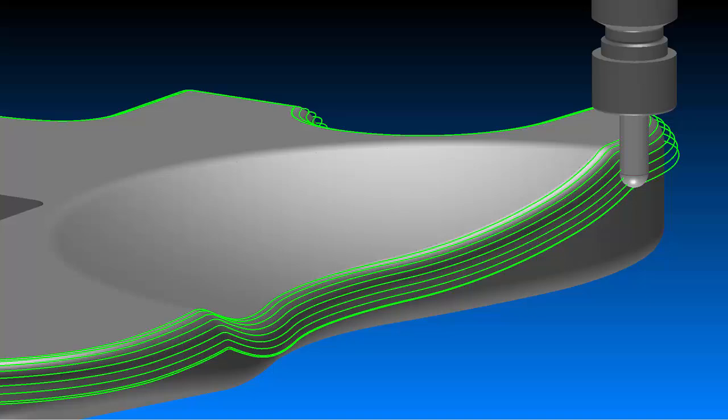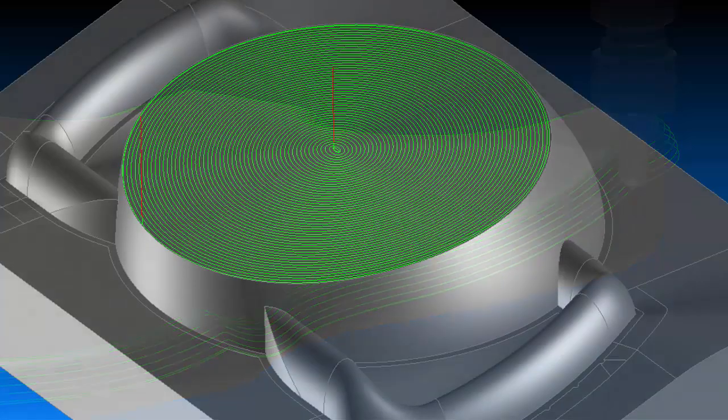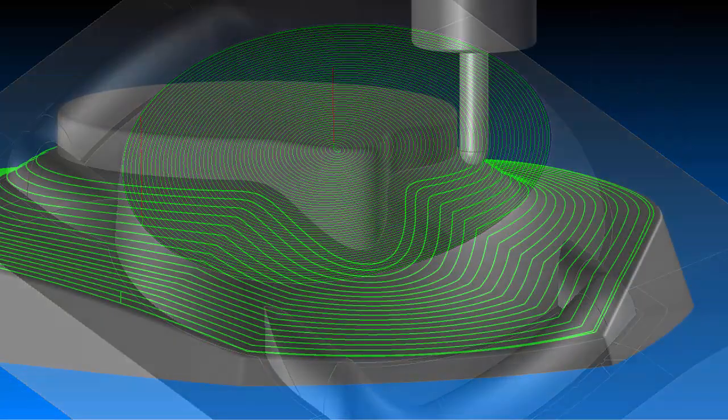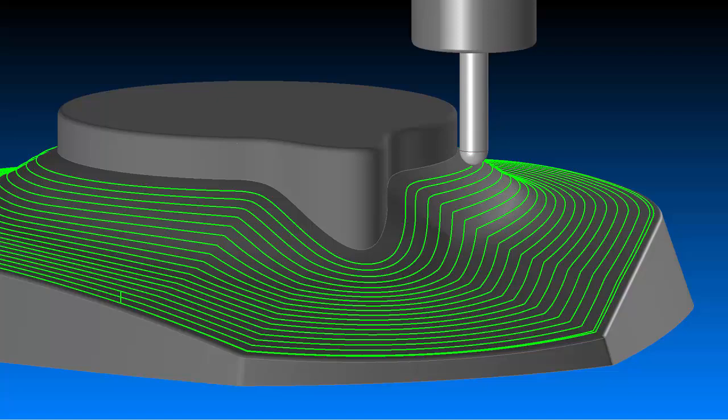Surfcam users requested additional toolpath control, including continuous spiral toolpaths. Spiraling toolpaths are now one click away in 3-axis multi-cut.